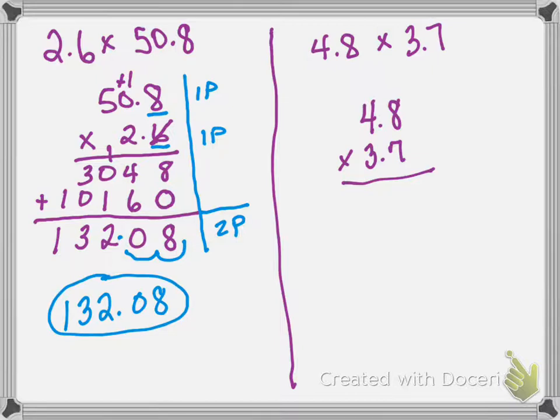So the first thing I'm thinking is 7 times 8 is 56. I'm gonna write my 6 down, I'm gonna regroup my 5. 7 times 4 is 28. 28 plus 5 is 33. I cross out my 7 because I've already used it for multiplying. I erase my 5, and then I'm gonna go back and add my 0 to represent moving to the next place value.